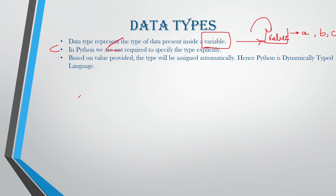This is a very important point for your placement purposes — this can be asked in your interviews. Why is Python called a dynamically typed language? Because the values provided to variables are not required to be assigned explicitly but are assigned automatically. This is the main reason why Python is called a dynamically typed language.